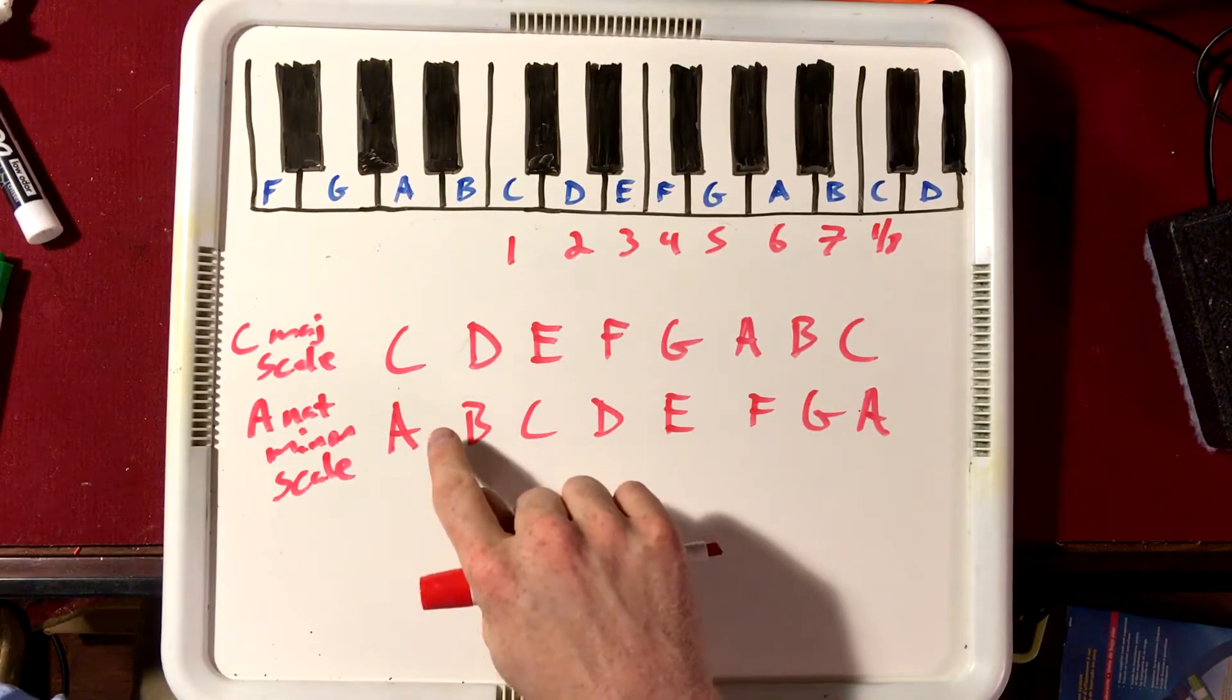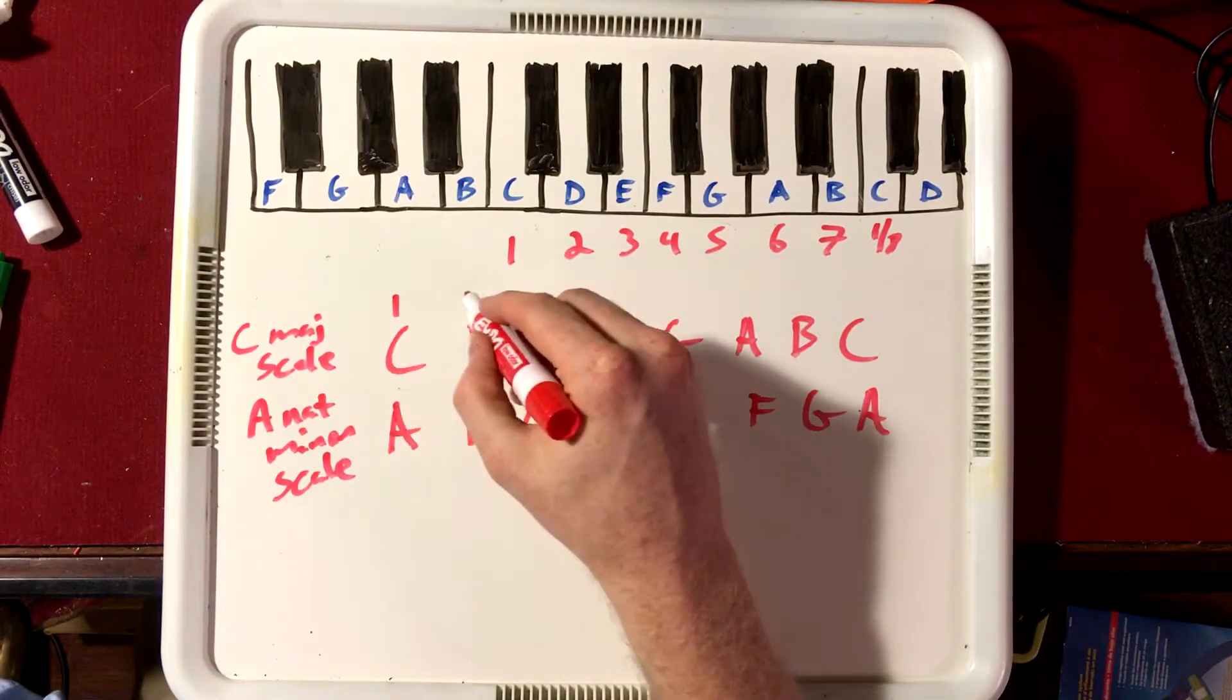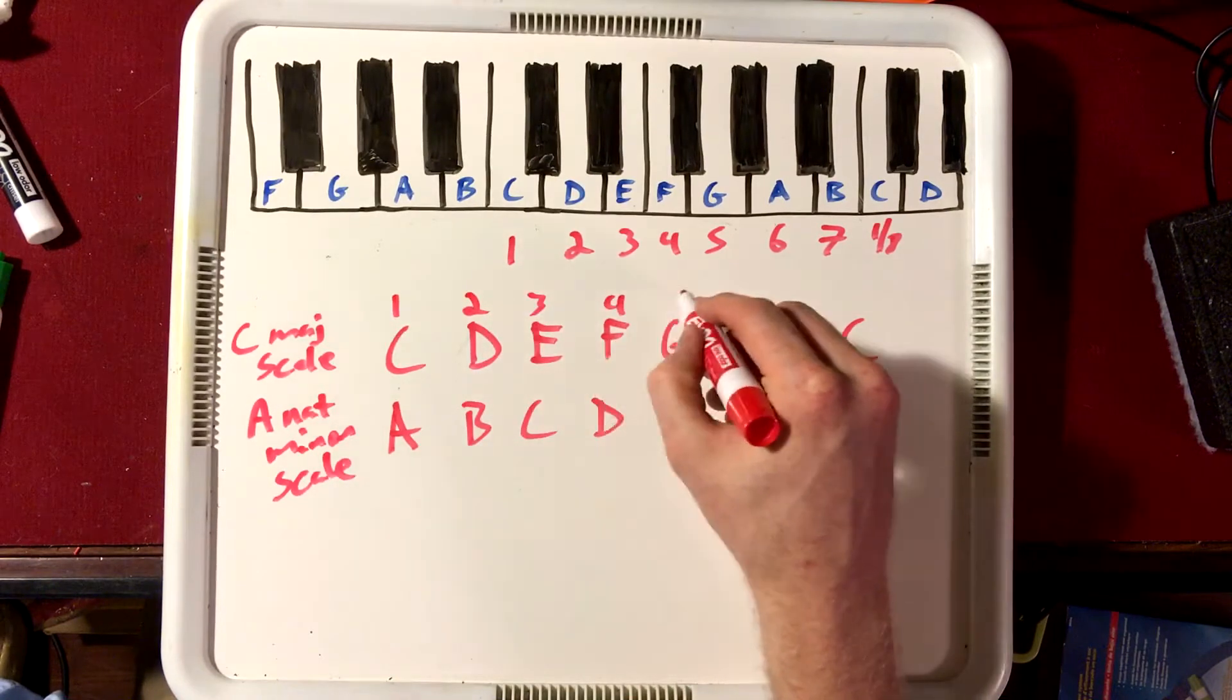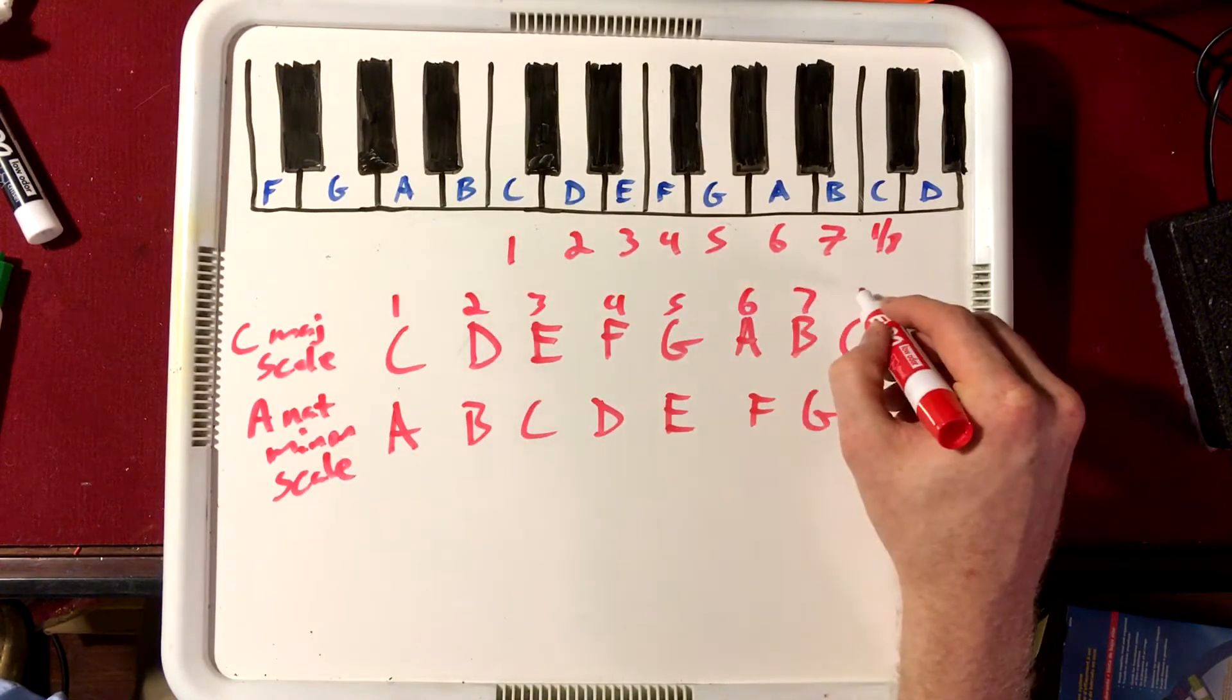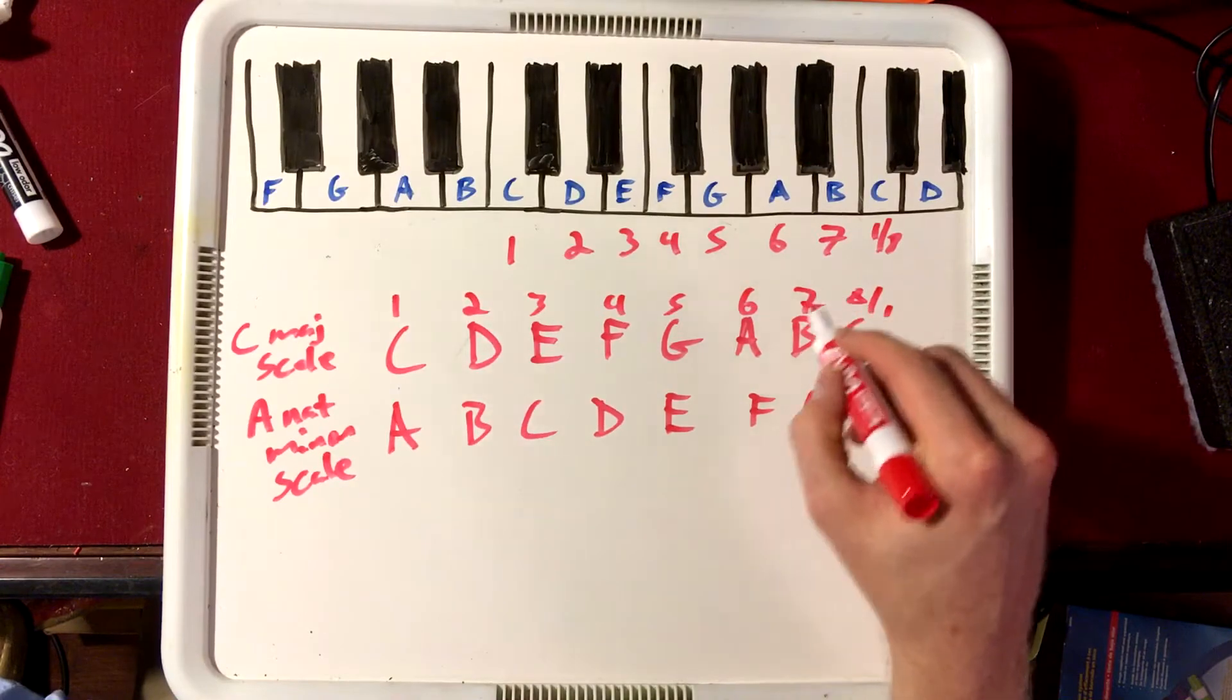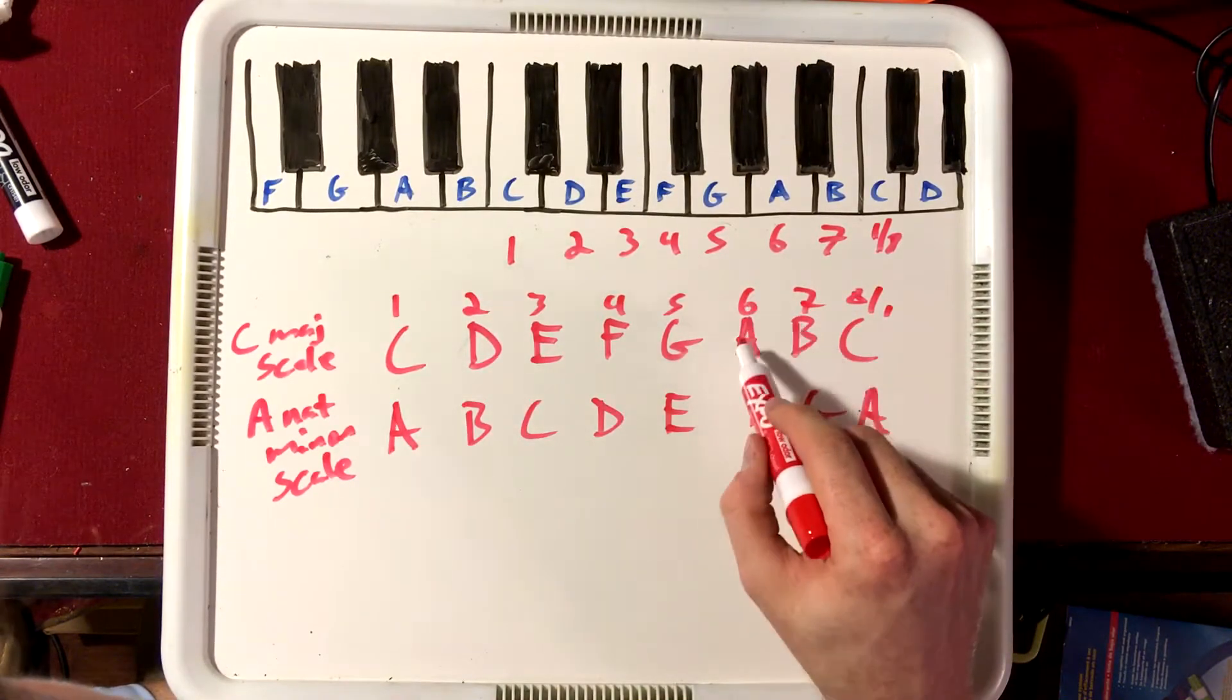Well, it's always going to be the sixth note of the scale. We have one, two, three, four, five, six, seven, and here's our eight and one again. It's always going to be the sixth note of the scale.